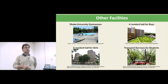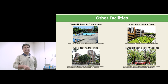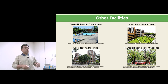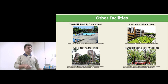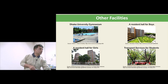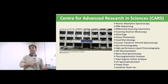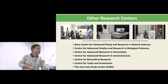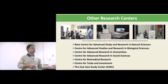Other facilities include a gymnasium and playing grounds. This is the boys' residence and this is the girls' residence. We also have a university bus service — more than 100 buses of the same color pick up students from different roads because of the traffic jam in Dhaka. Only students can ride these buses. These are some research centers with common instruments. There is also a Bose Center named after Bose of the Bose-Einstein theory, and a Center of Advanced Studies with different kinds of research centers.